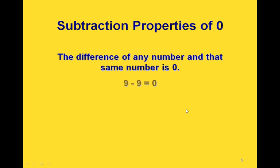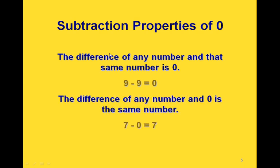Now there are two subtraction properties of 0. The first one is that the difference of any number and that same number is 0. If you subtract 9 from itself, for example, you're going to get 0. The second property is that the difference of any number and 0 is that same number. So for example, if we take 7 and subtract 0, we're going to get 7.